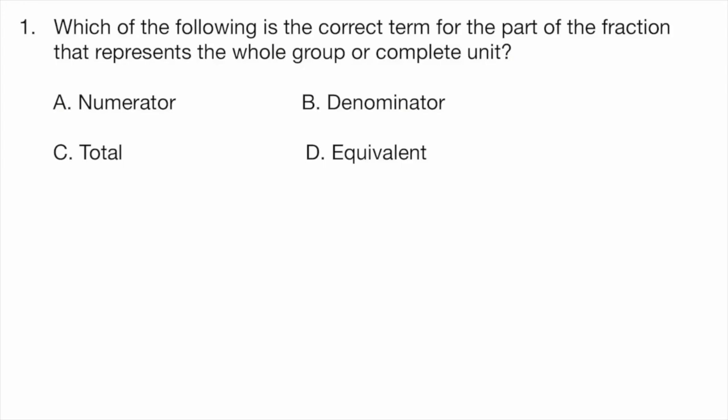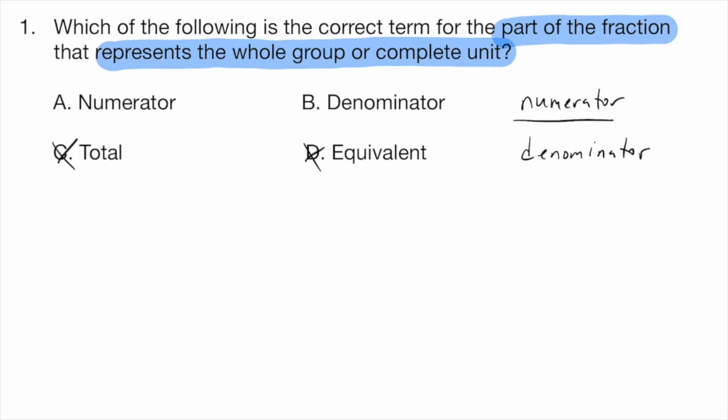So as we look at the problem, we're looking at the part of the fraction that's representing the whole group or complete unit. When looking at a fraction, we know that there's two parts. There's the numerator at the top, and there's the denominator at the bottom. So we can automatically eliminate options C or D. And now we want to know which one of these parts represents the whole group. Our correct answer is going to be answer choice B, the denominator. So whenever you're looking at a fraction, let's say we're looking at a fraction like three-fourths. The top number, three, is representing the part that you do have. And the part of the fraction on the bottom, four, is representing the whole amount. So three-fourths means you have three out of the four.